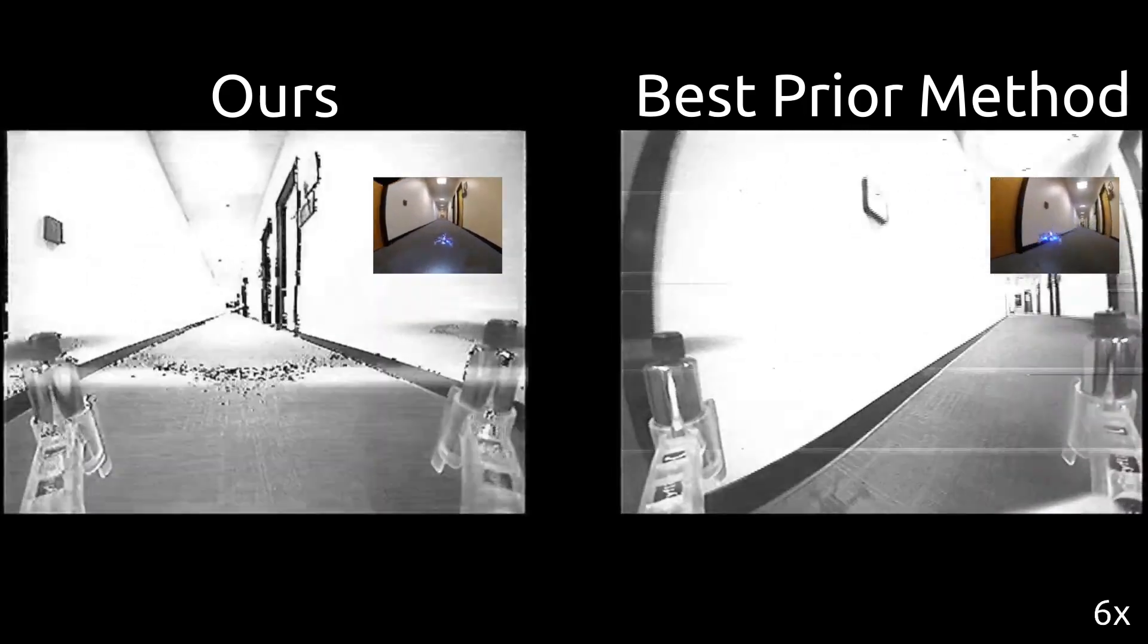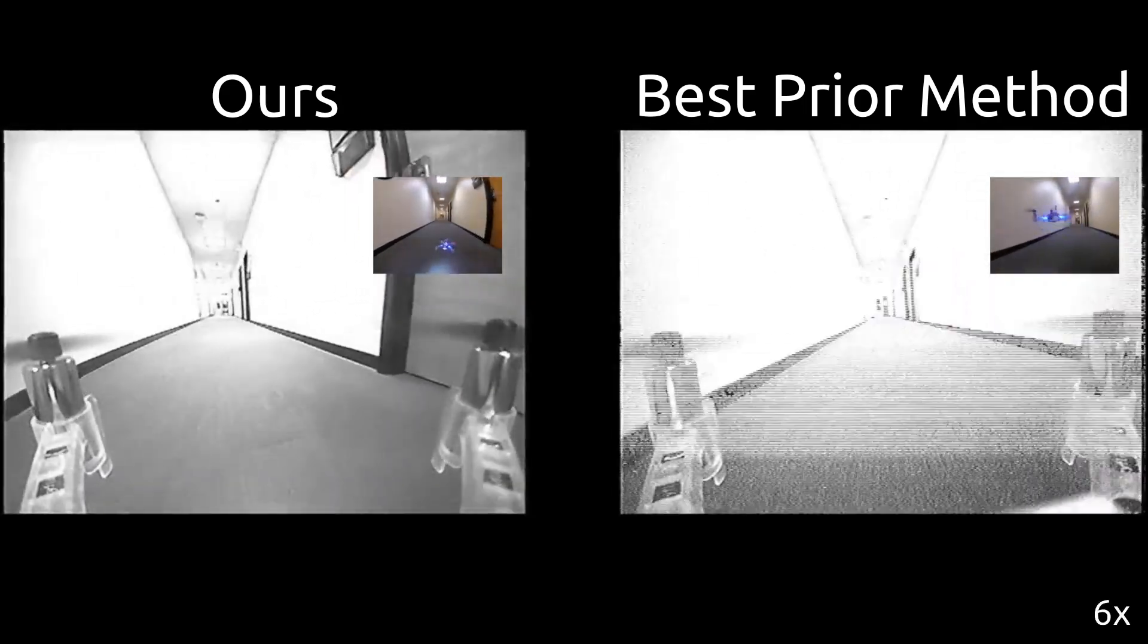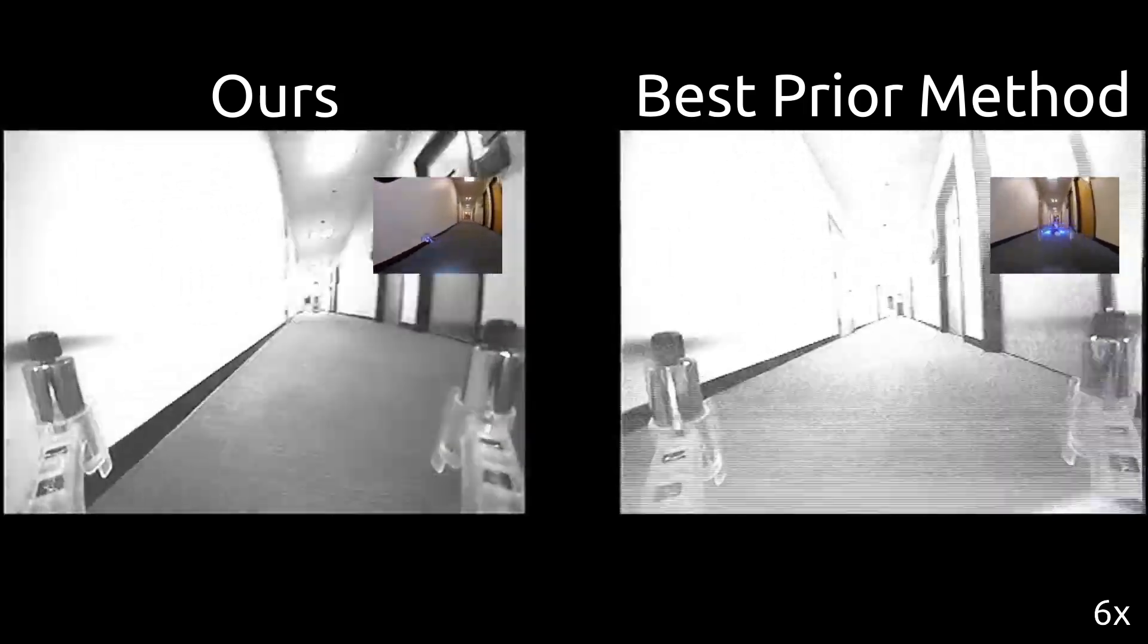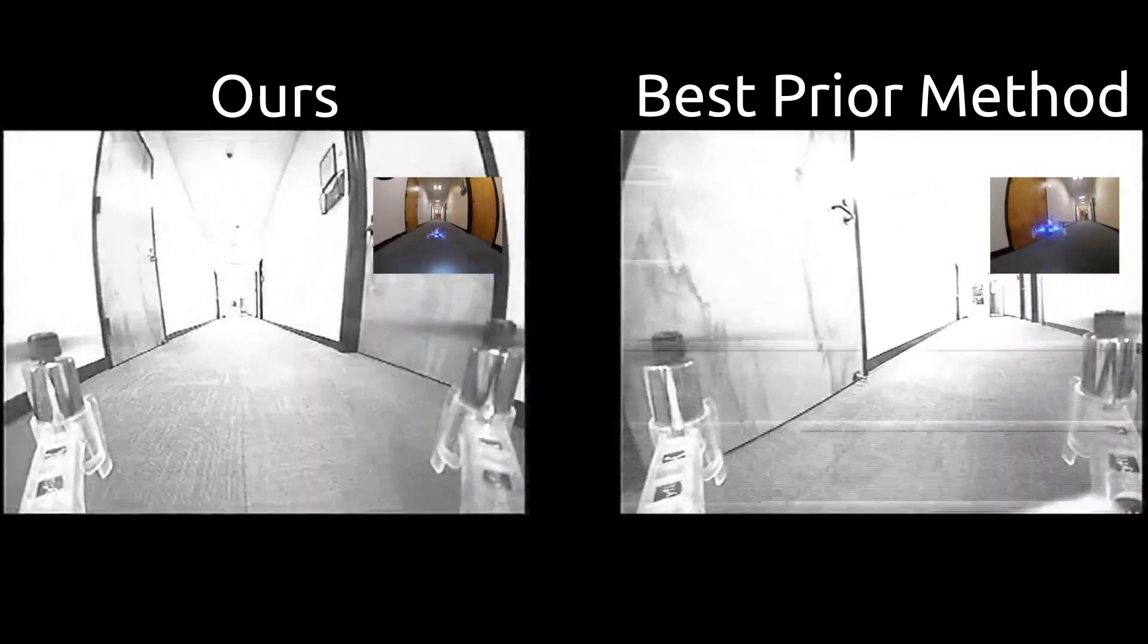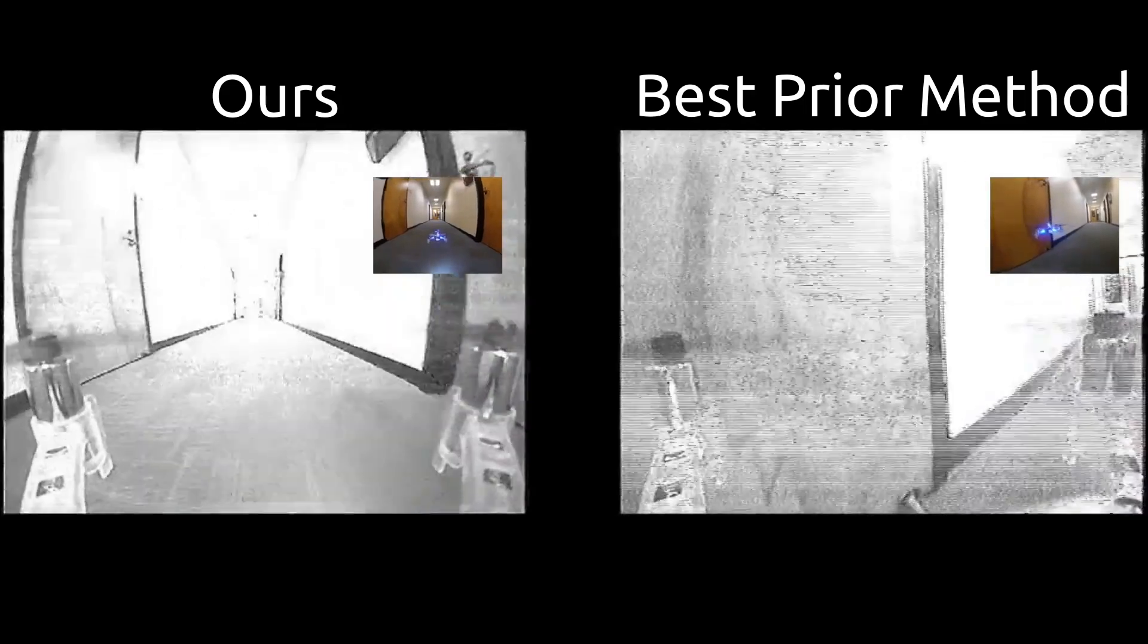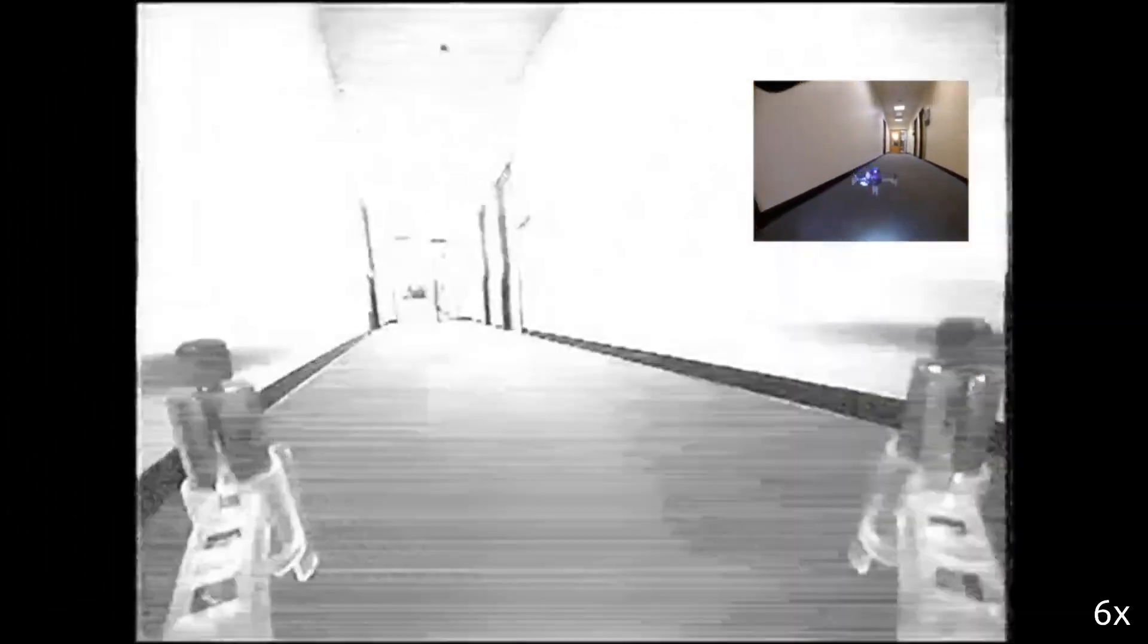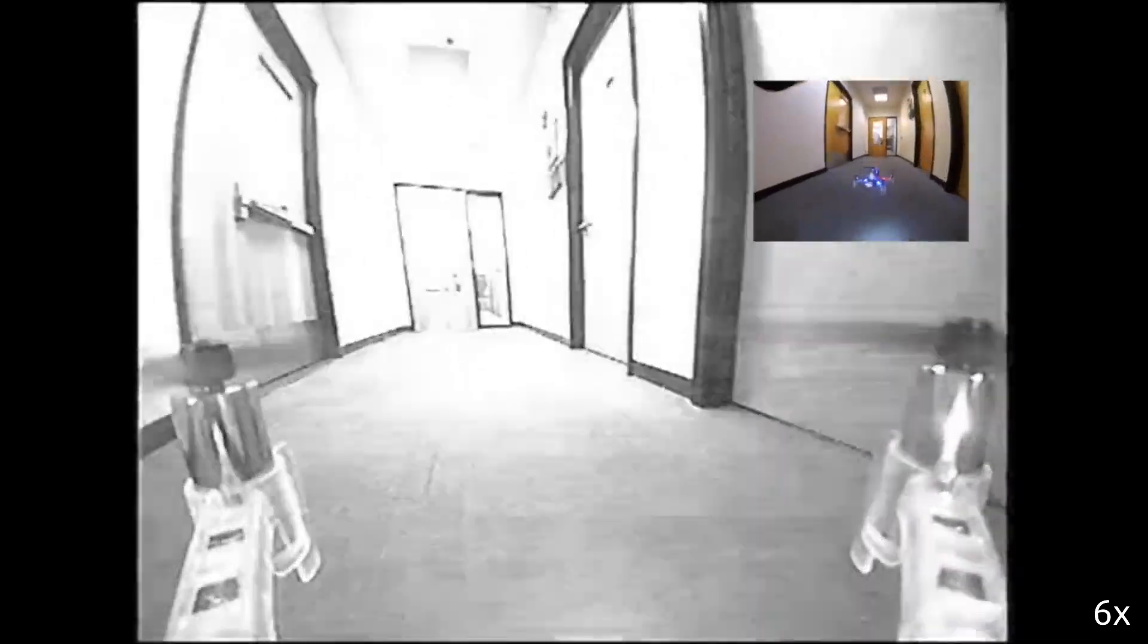We compared our approach with multiple prior methods for sim-to-real transfer, but show only the best prior method here. The best prior method was to learn a feature representation on the simulated data using unsupervised learning, and then fine-tune on the real-world data while holding this representation fixed.